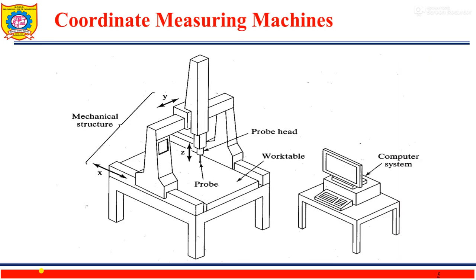Here I am showing a figure of a Coordinate Measuring Machine. This figure shows the schematic diagram of a CMM, illustrating its mechanical structure. It shows three axis directions — X axis, Y axis, and Z axis — along with the probe head and work table. This total system is connected with a computer system, meaning the CMM is computer-assisted.